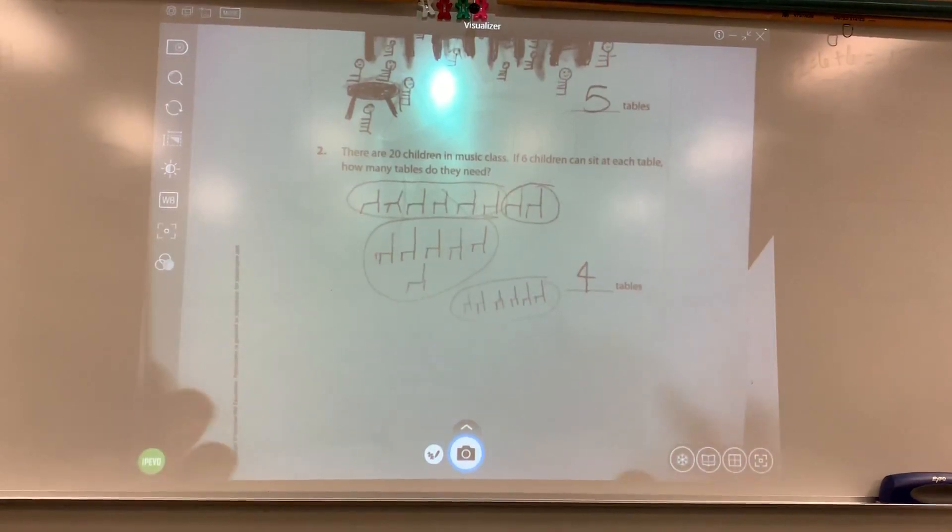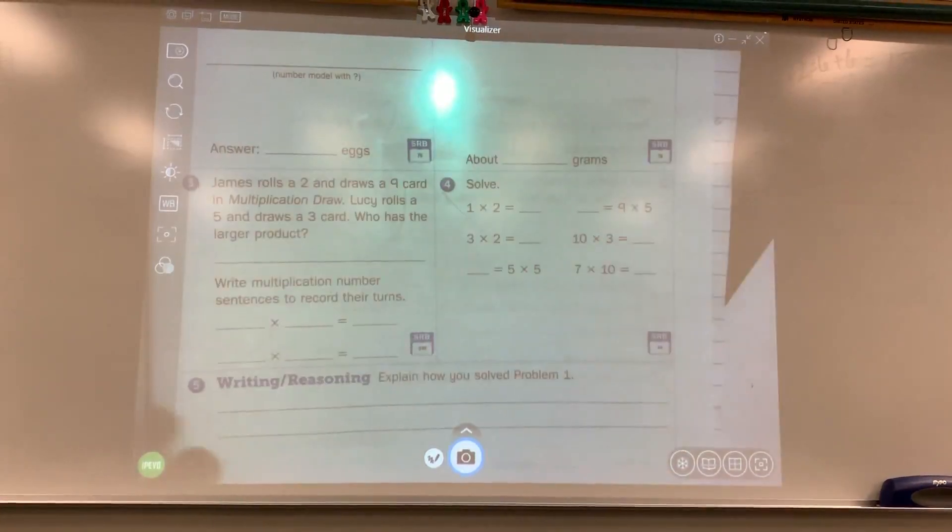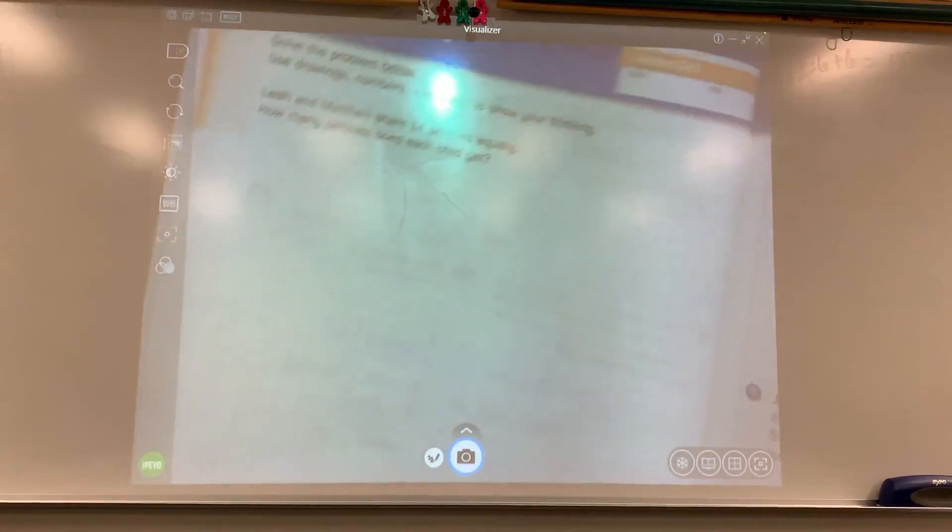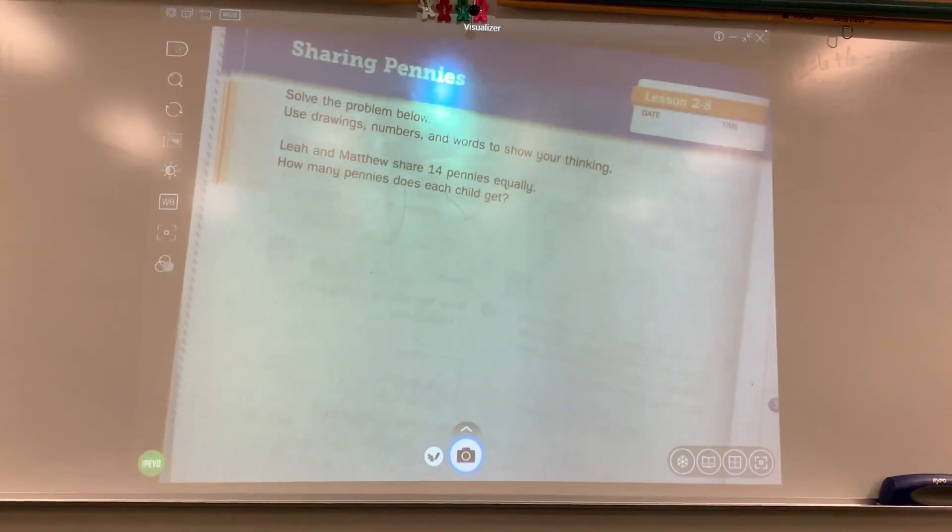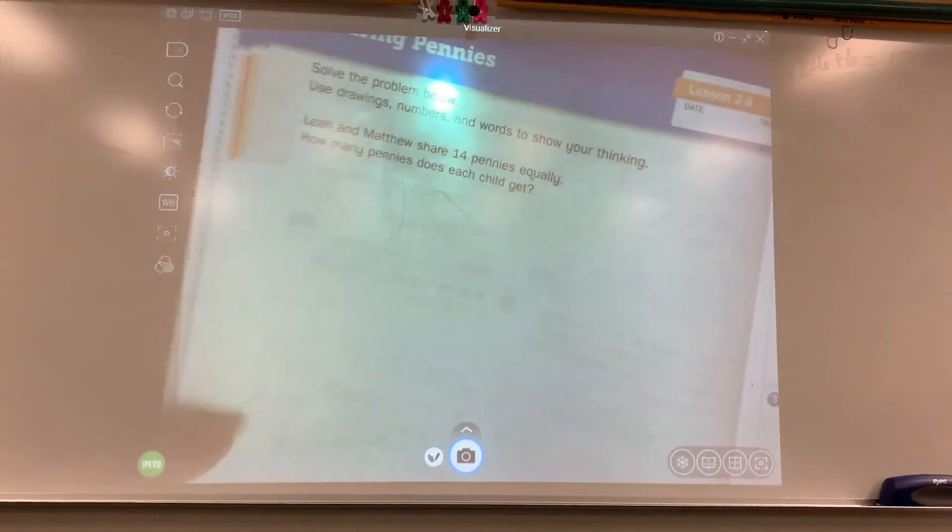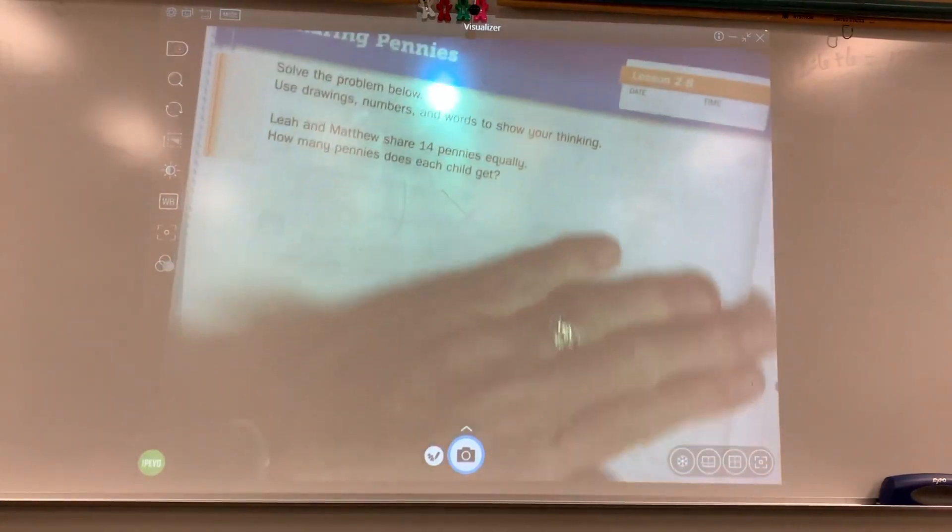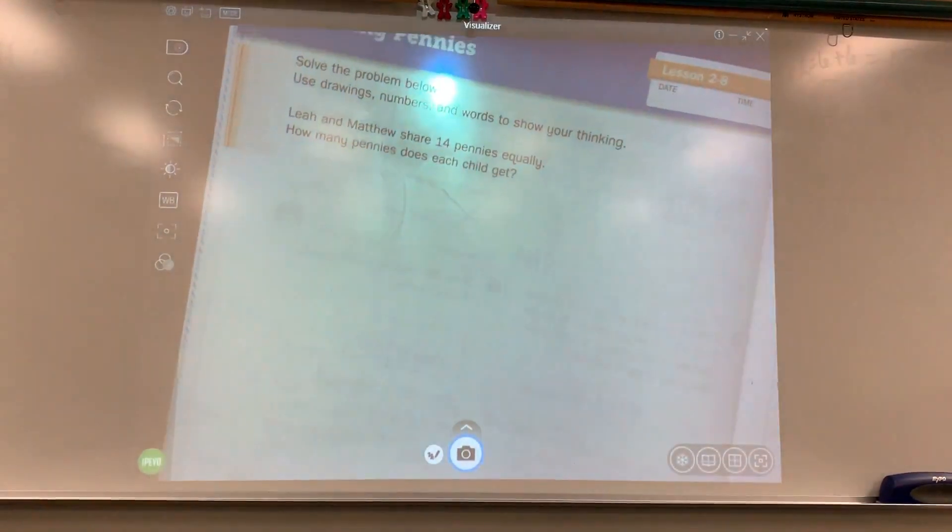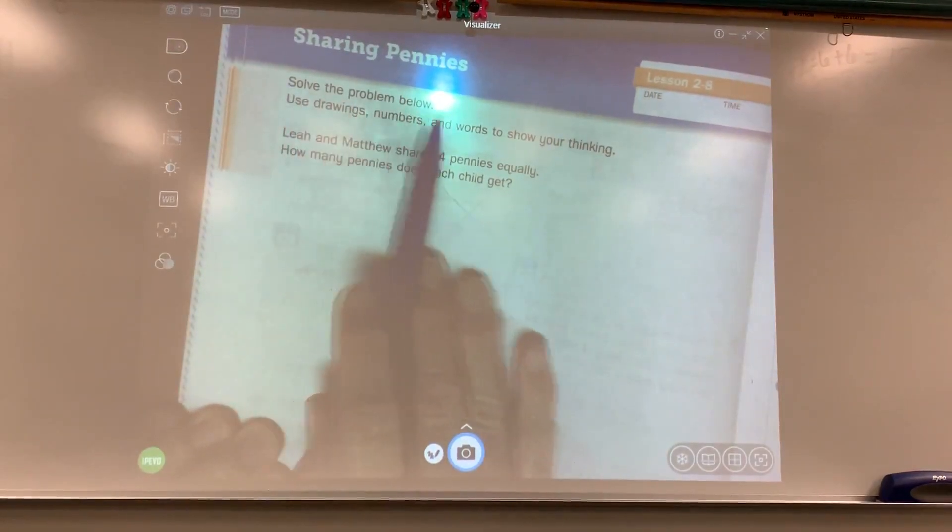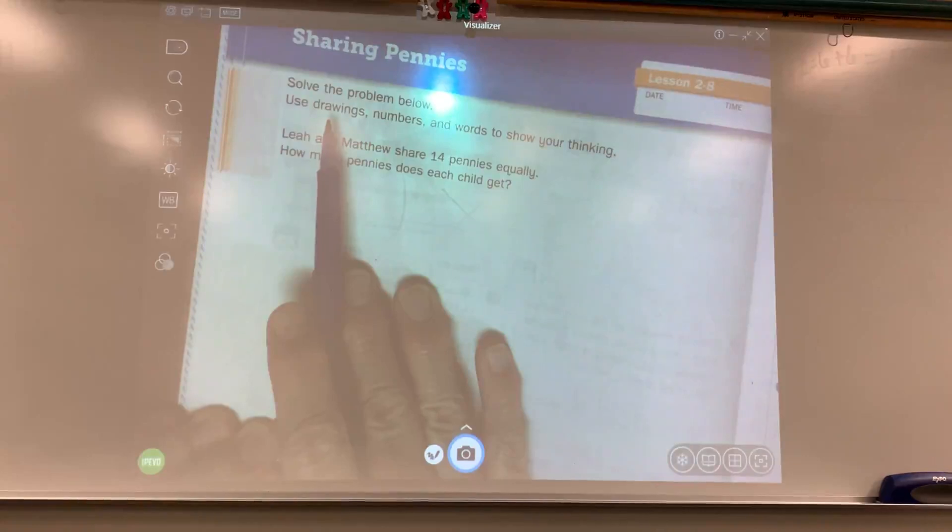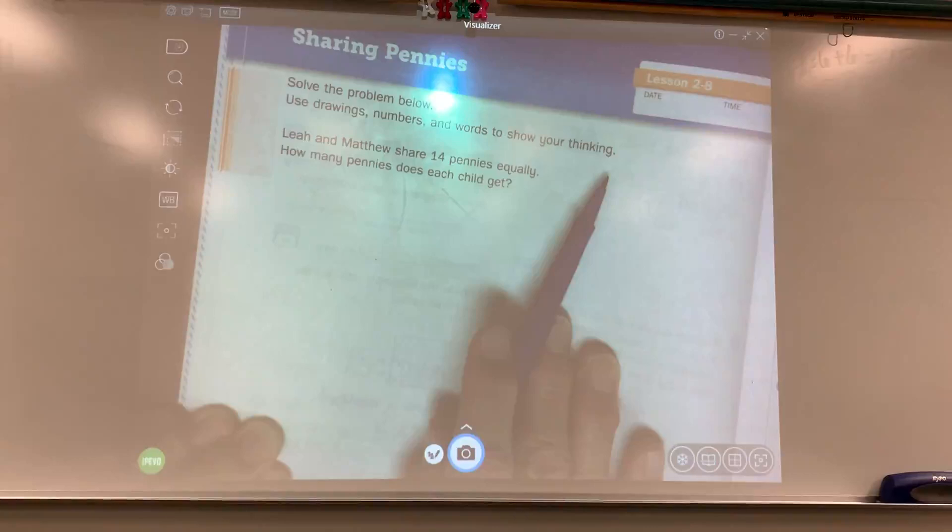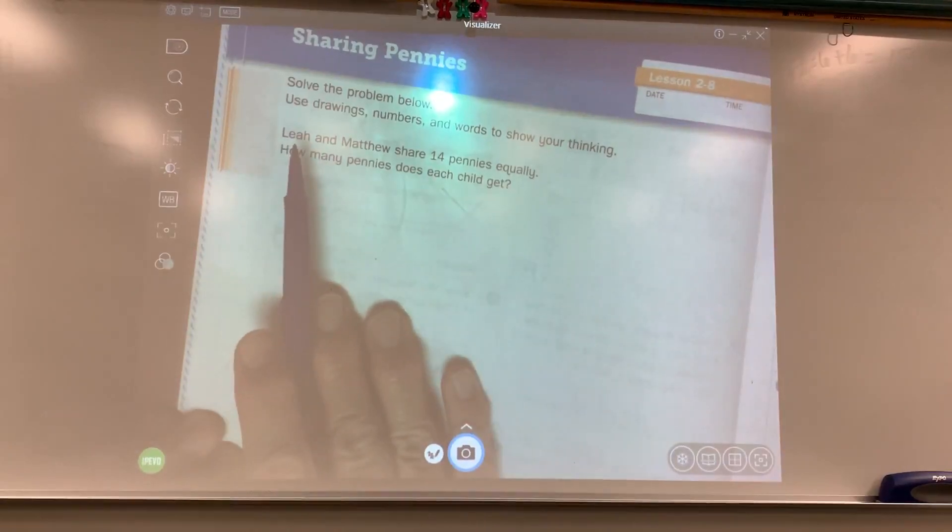So now it is your turn. You're going to turn to page 50 in your journal, volume one, page 50. I'll give you a minute to get that open. And it tells us right here, we're going to solve the problem below. Use drawings, numbers, and words to show your thinking.